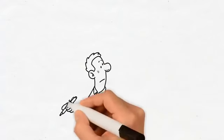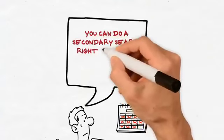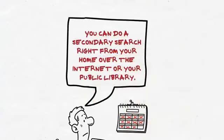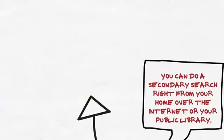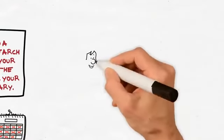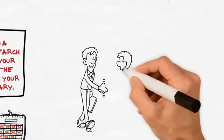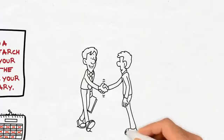So do your homework and gather as much information as you can. You can do a secondary search right from your home over the internet or your public library. You can even visit government offices for this information, but by far the best option is primary research where you directly interact with your target audience to know their preferences and how ready they are to buy your product.